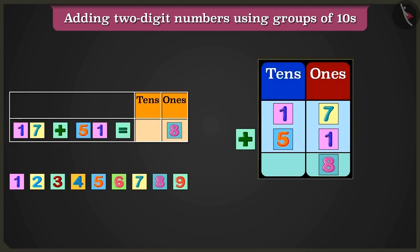Now, we will add the numbers in the box of tens. So, 1 tens added to 5 tens will equal 6 tens. Now, we will write 6 in the tens place.